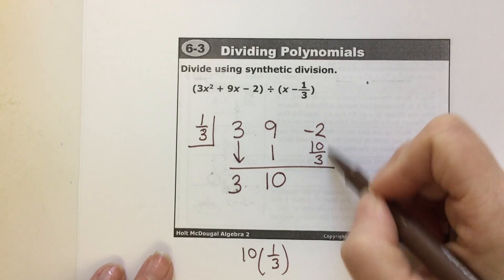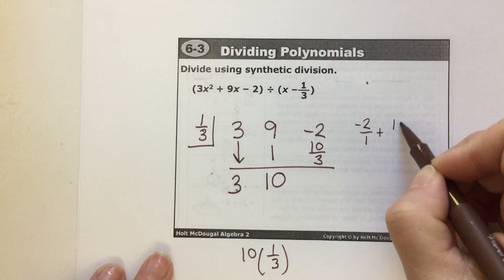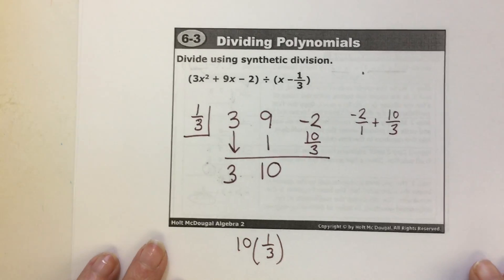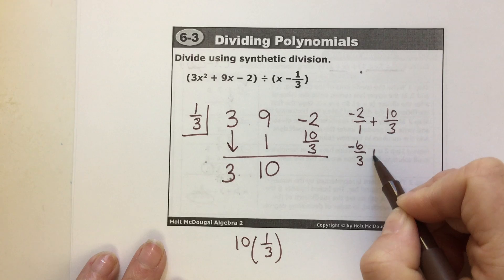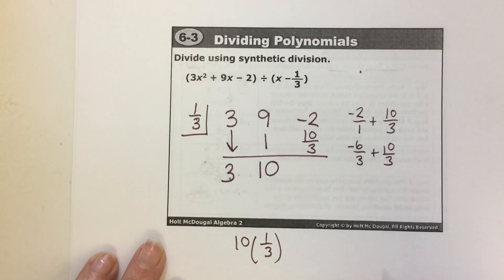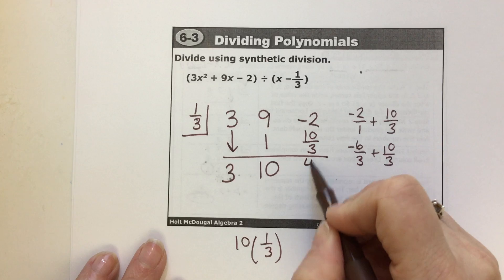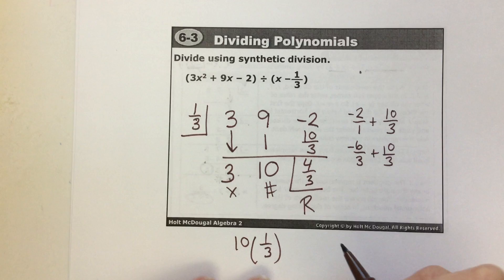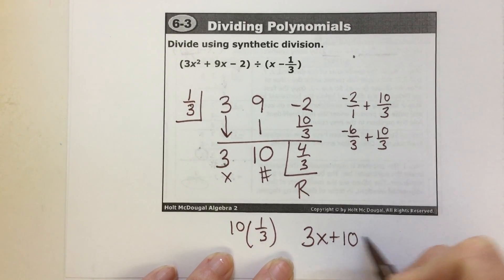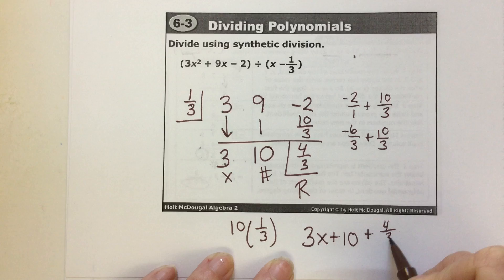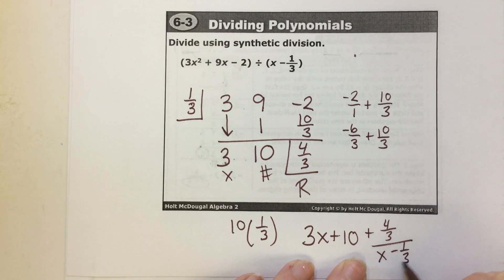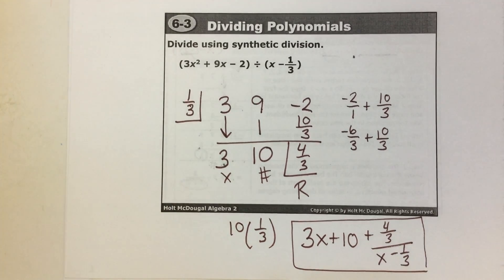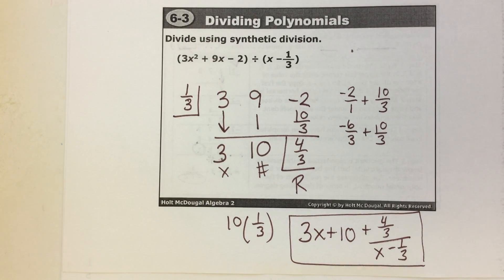Now I need to add negative 2 plus 10 thirds. You cannot add fractions without a common denominator, so this becomes negative 6 thirds plus 10 thirds, making 4 thirds. Here's your remainder, here's your constant, and here's your x term. You get 3x plus 10 with a remainder of 4 thirds over x minus 1 third. For right now, just leave the fraction over a fraction — you're focusing on learning the new skill of synthetic division.